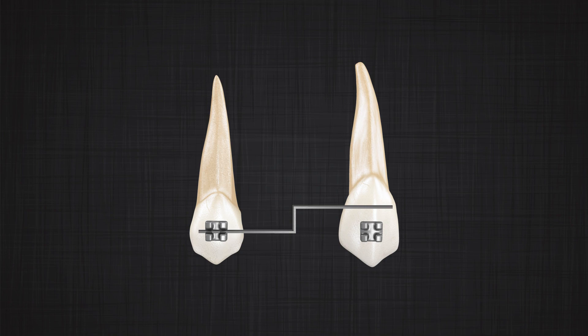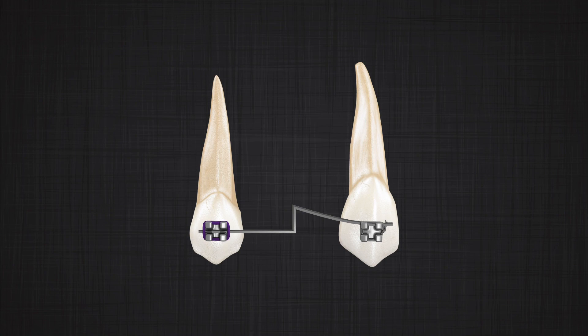If I bring the wire down to connect it to the canine only through one contact point — whether by putting a ligature tie or a drop of composite — I don't engage it in the canine bracket. What system do I have? Yes, we have a one-couple system. On one side we have two contact points because the wire was inserted inside the bracket; on the other side we have one contact point because the wire was not inserted inside the bracket. Can you imagine what forces and moments appear in the system?